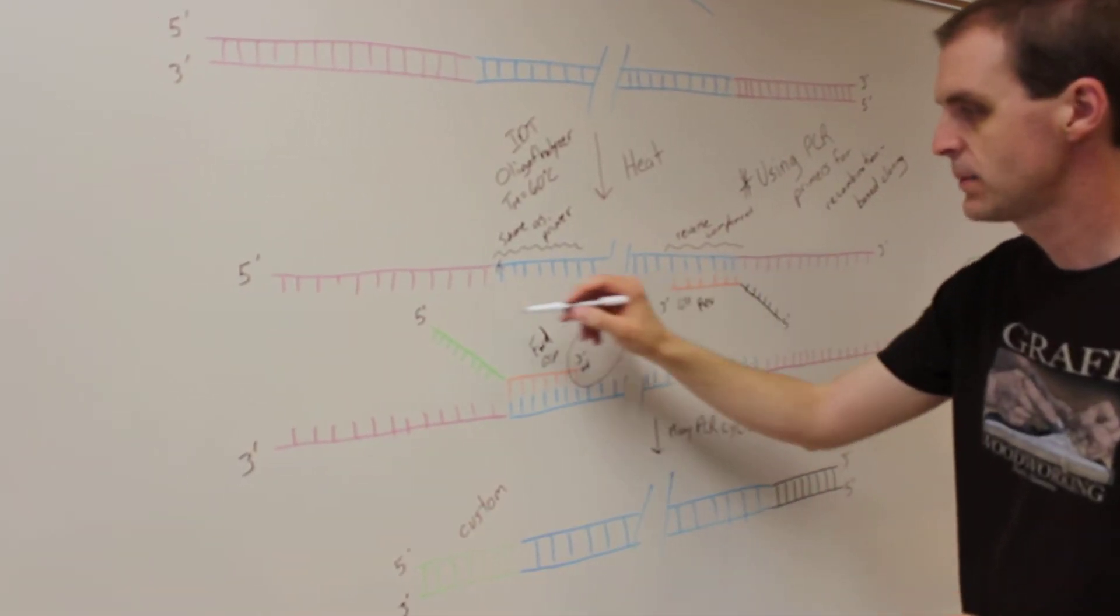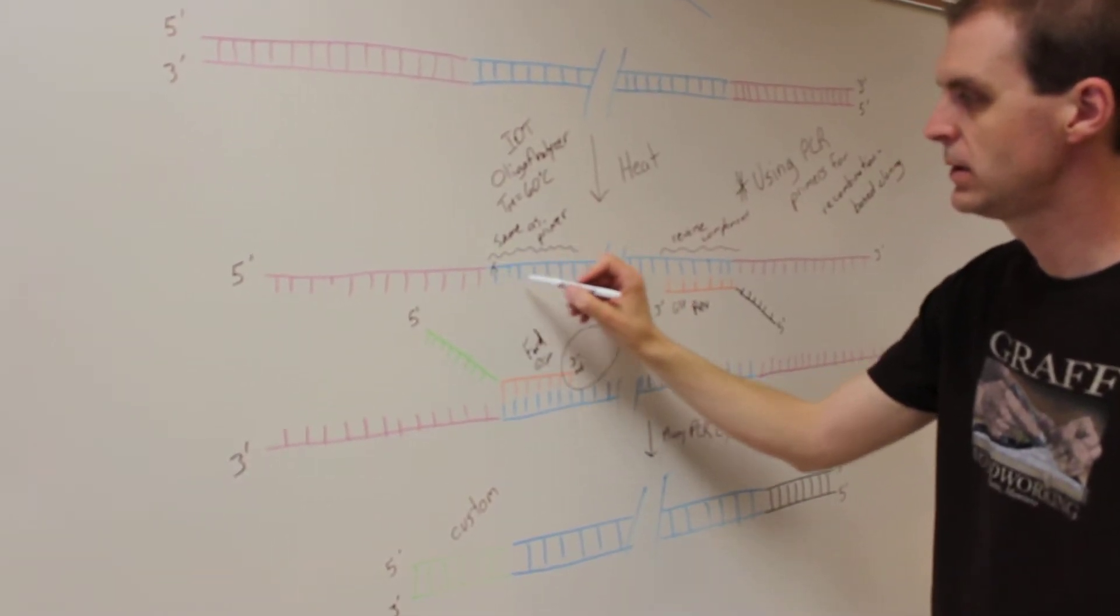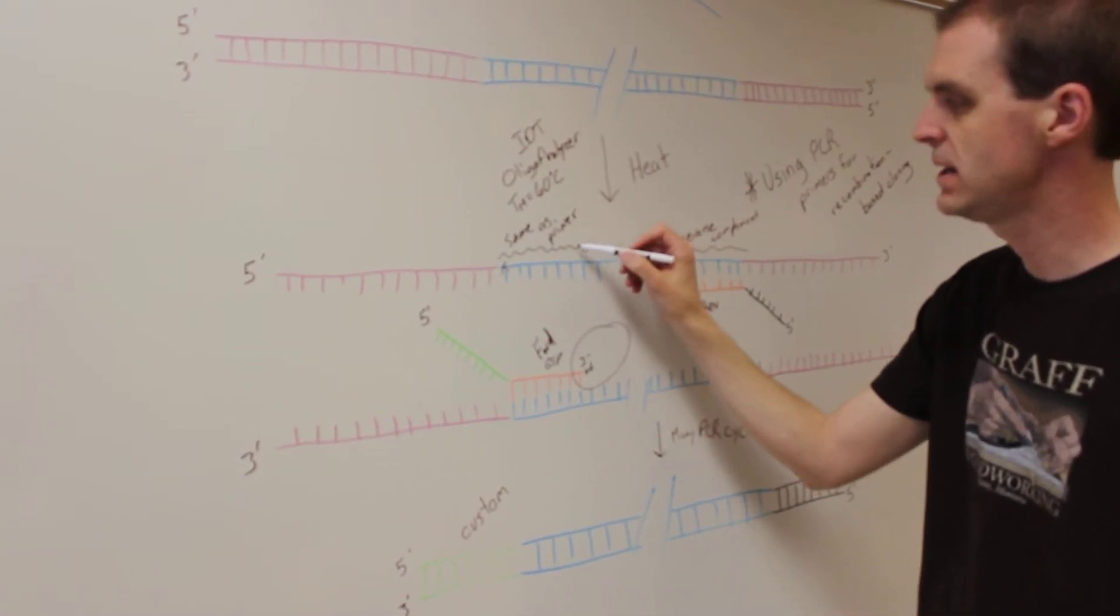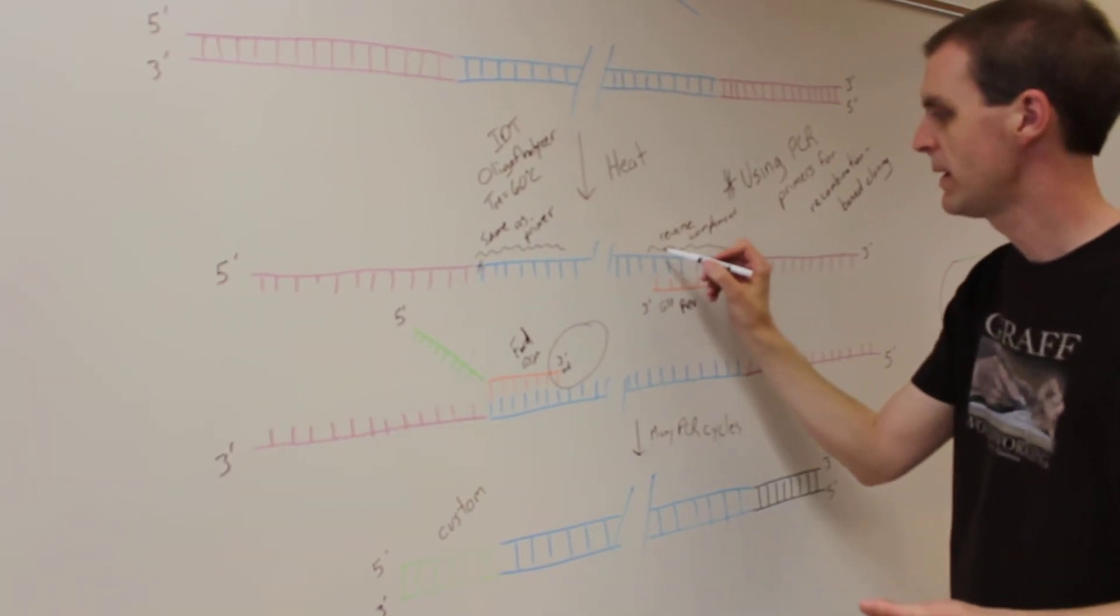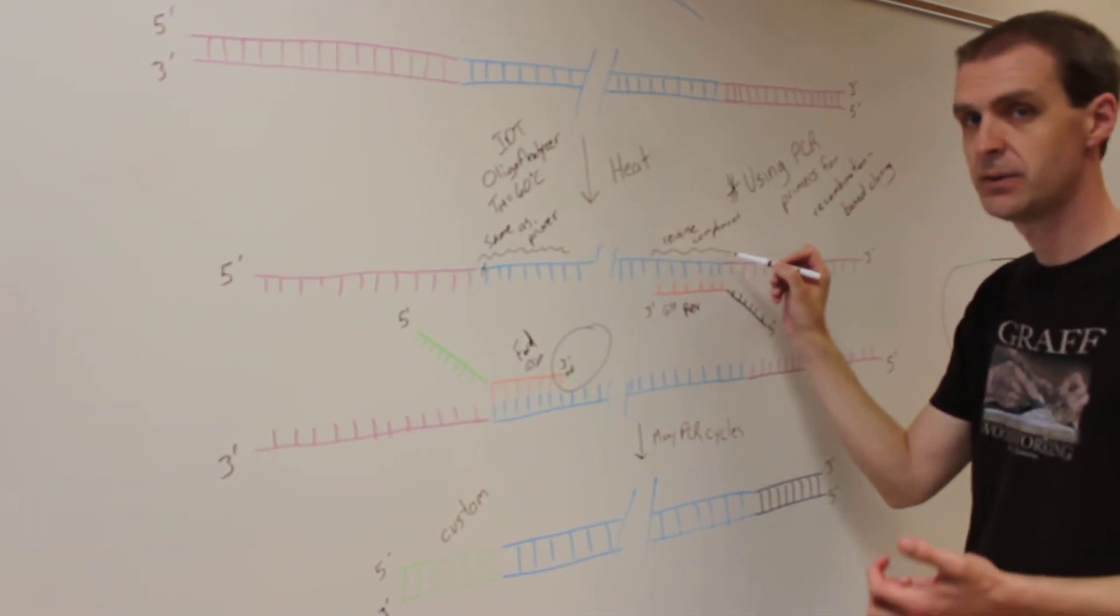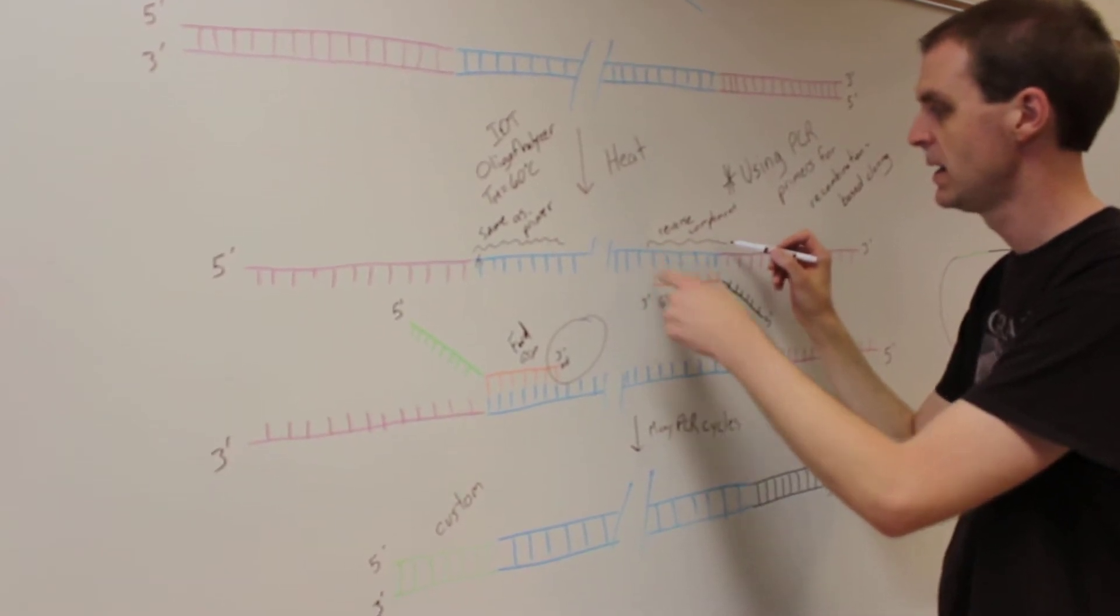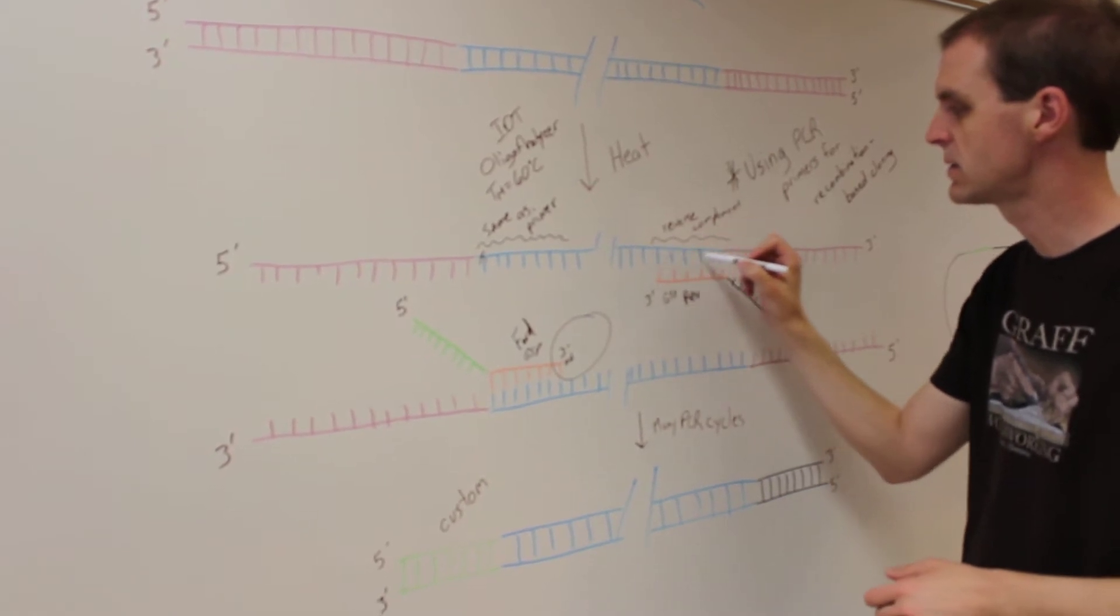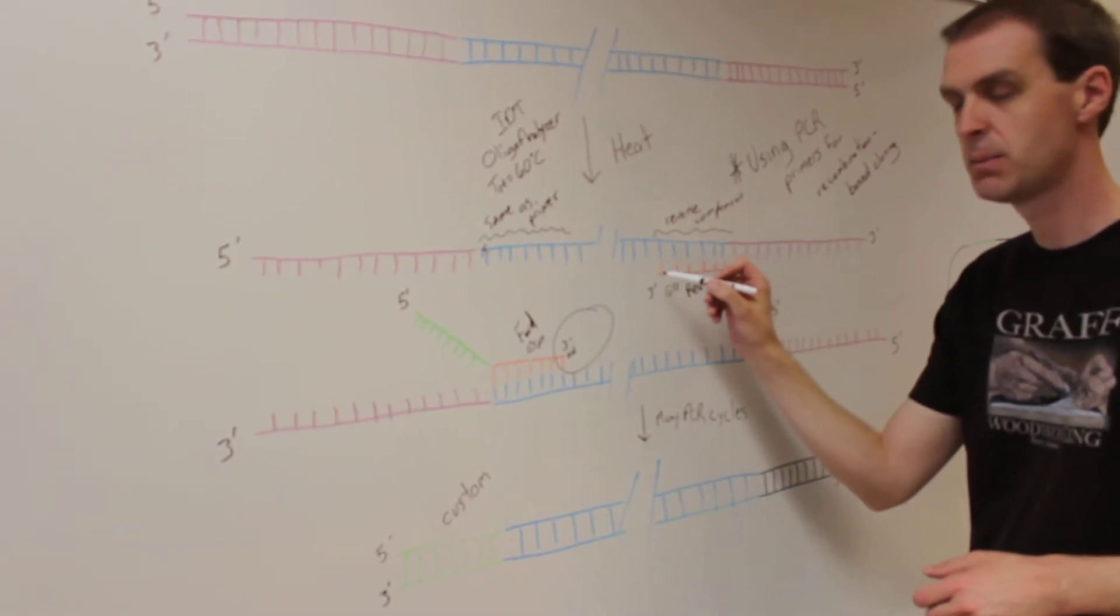When we designed this sequence, we noted that this sequence here in orange matches this sequence here, that is the top strand sequence. However, the sequence at the end of your gene, or whatever length of DNA you're trying to amplify, is going to be this strand, you need to get the reverse complement.